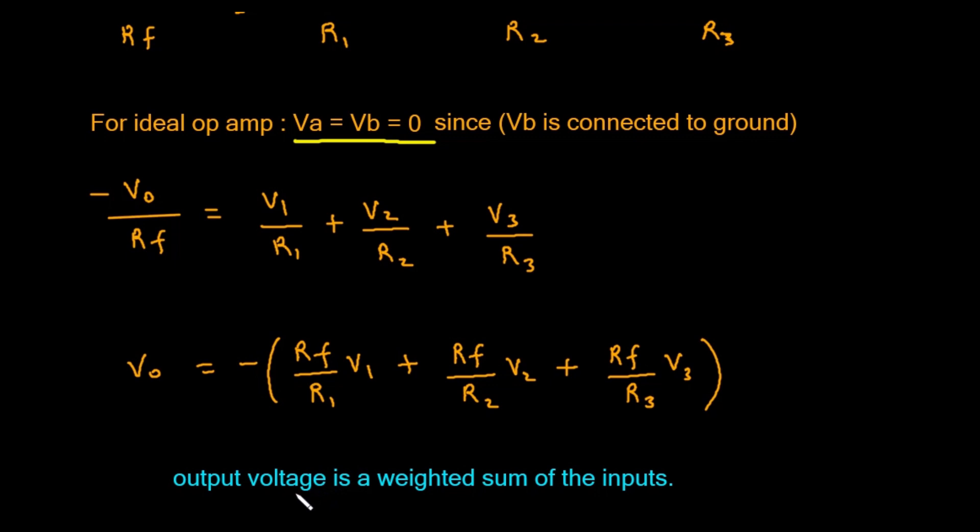Let's take a moment to understand what this final formula is telling us. First, notice the negative sign out front. This means the output will always be the inverted, or opposite polarity, of the sum. If the sum of the inputs is positive, the output will be negative, and vice versa. This is because we are using the op-amp's inverting input.